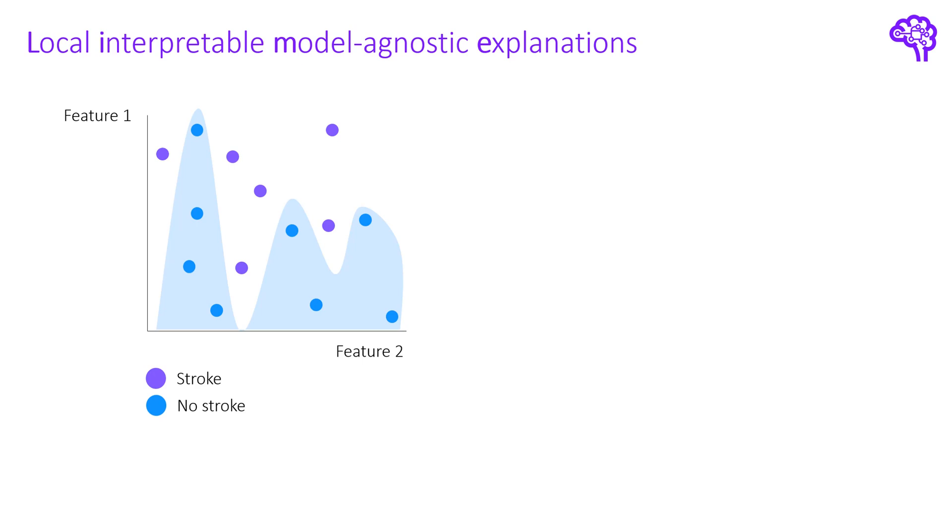For a new data point, if it falls into the blue area, we predict no stroke, otherwise we predict stroke. So the prediction we make is highly nonlinear, or in other terms there is no easy to explain relationship in how we perform a prediction. The model just learned some complex patterns as a combination of those two features.